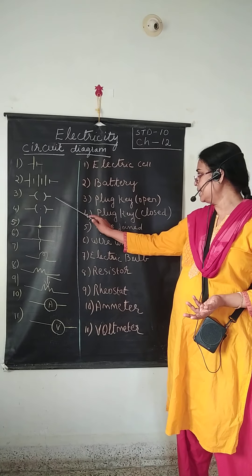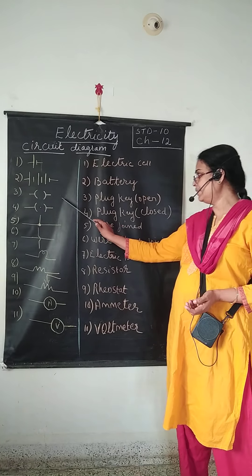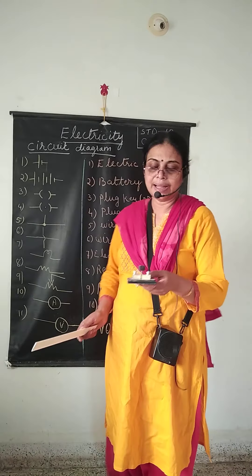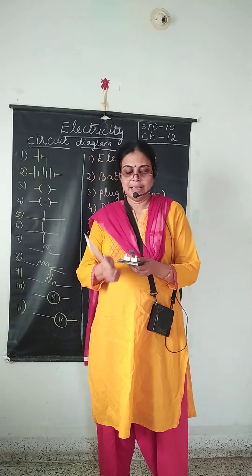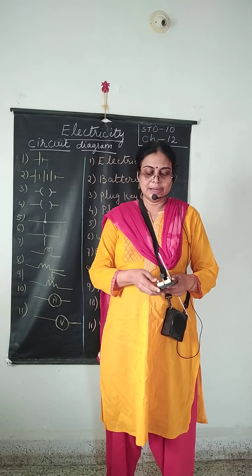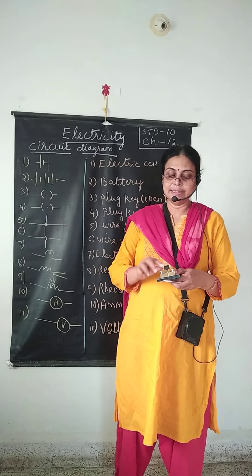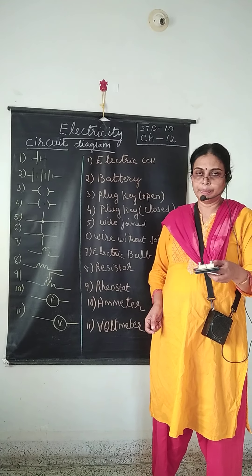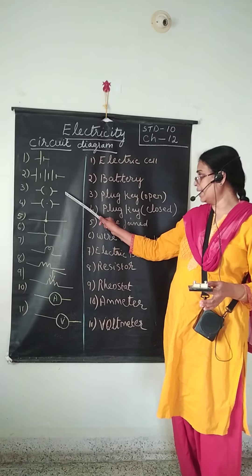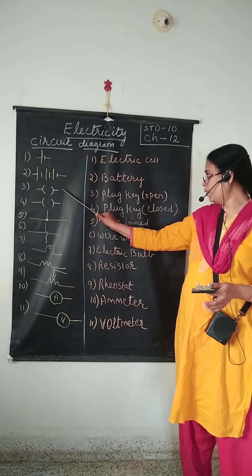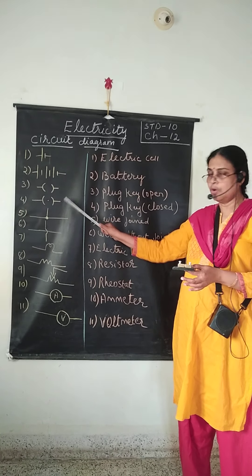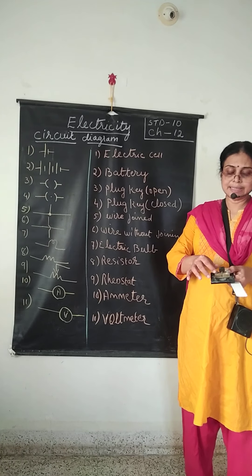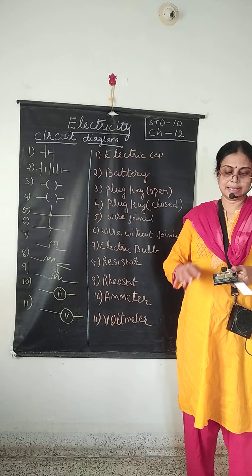Now we will see what the plug key looks like — open and closed. The real apparatus of a plug key looks like this. You can see a plug over here — this is a closed key. Now if you remove this plug, it is called an open key. In the circuit diagram, this is the open key and this is the closed key. If you put a plug over here, this becomes a closed key. You can see this apparatus has two screws.